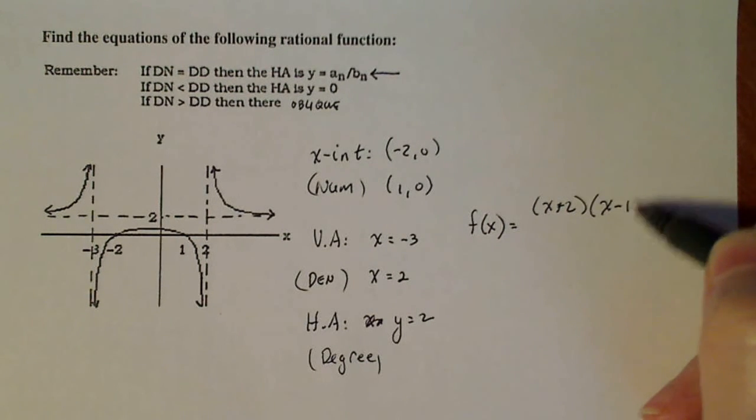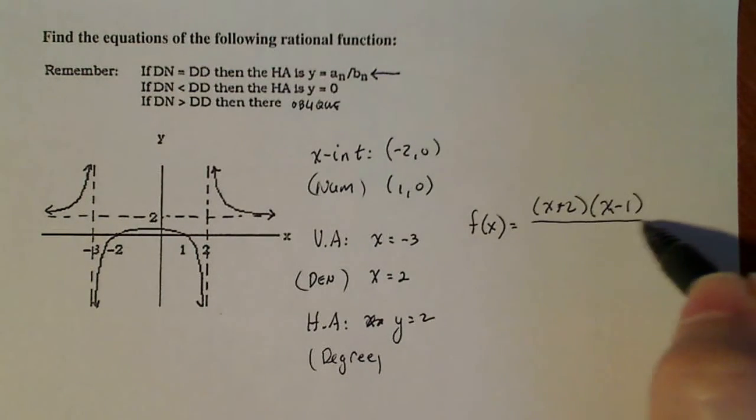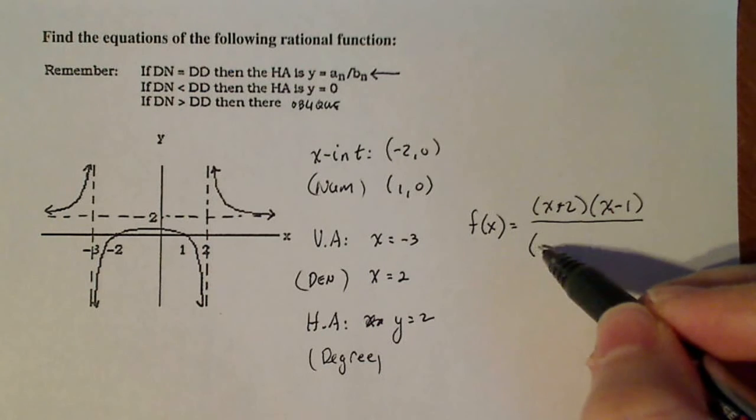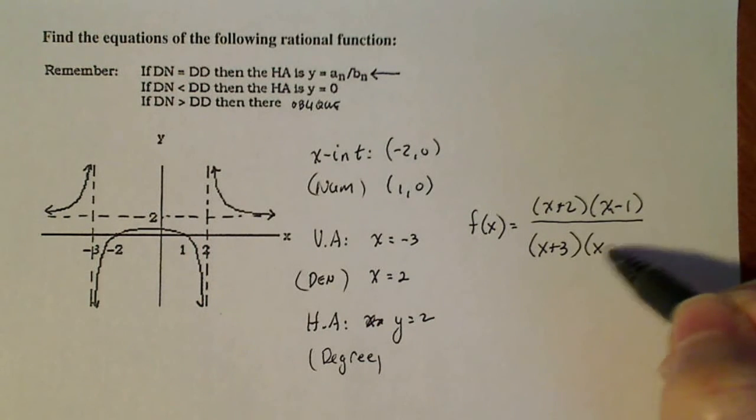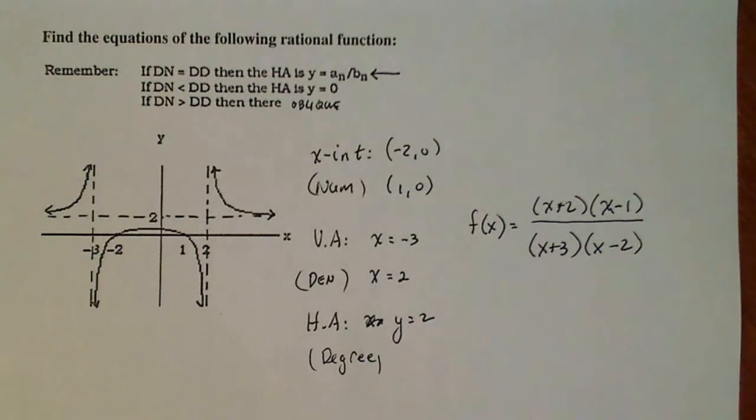I'll do something similar in the denominator. x plus three becomes zero when x is negative three, and x minus two becomes zero when x is two.